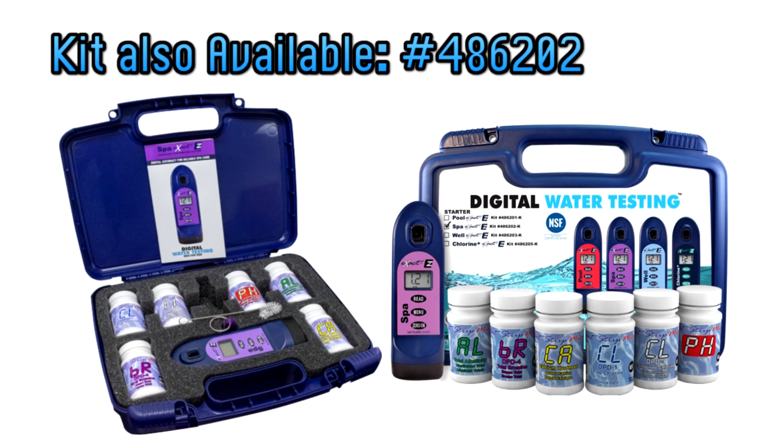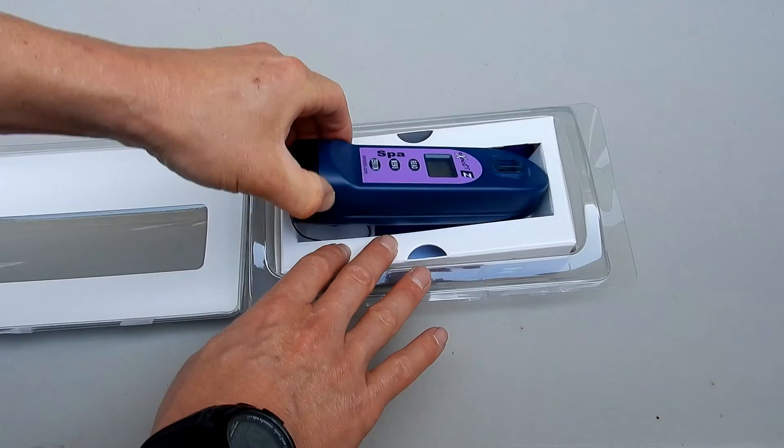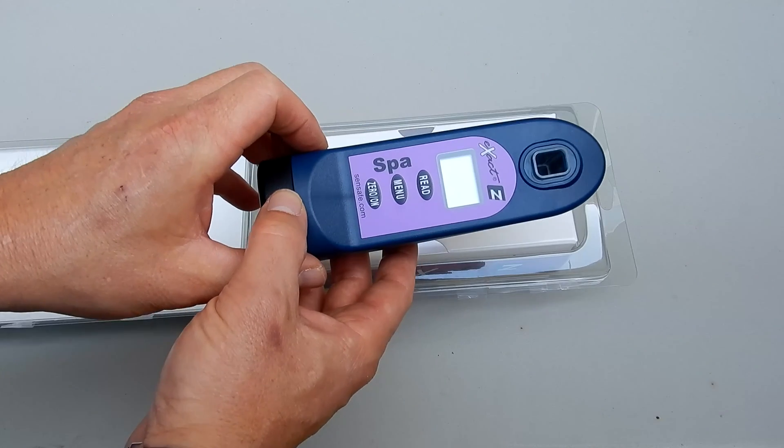It is also a kit available that comes in a hard plastic case that contains 25 tests of each of these test factors including bromine. And inside the box is the Spa Exact EZ photometer.